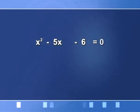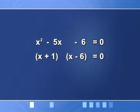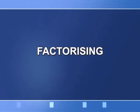Going back to the equation, x² − 5x − 6 = 0 can be written as (x + 1)(x − 6) = 0. Whenever the product of two factors is 0, either both factors are 0 or at least one of them is 0. So if x + 1 = 0, then x = −1, and if x − 6 = 0, then x = 6. This means we have solved this equation by the method of factorization.